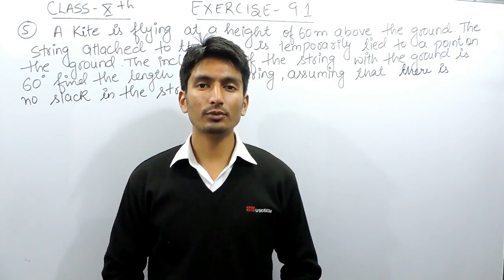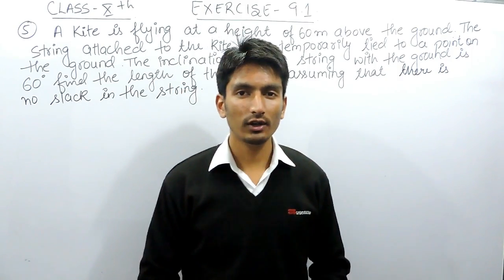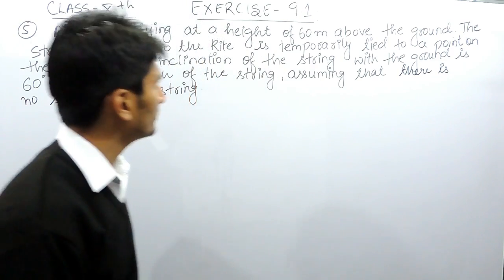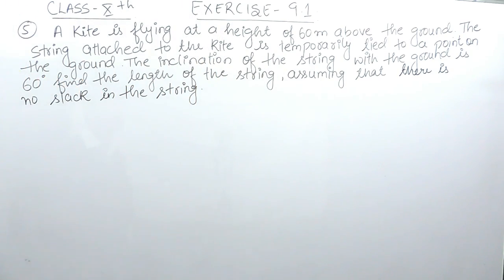Hello everyone, we are from True Maths, and in this video we are going to solve question number fifth of exercise 9.1. The question says a kite is flying at a height of 60 meters above the ground.